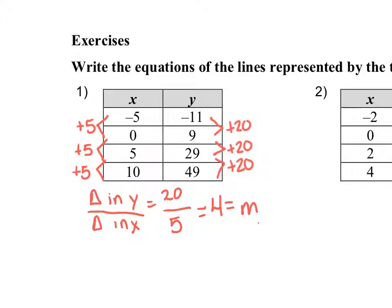And 20 over 5 simplifies to 4, which is our m piece. Our y piece, our b, y-intercept, is going to be right here. When x is 0, our y is 9. So our b is going to equal 9.